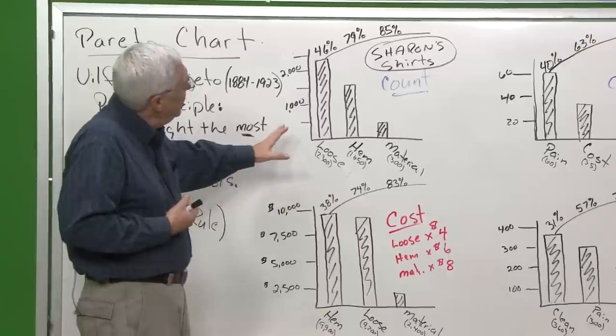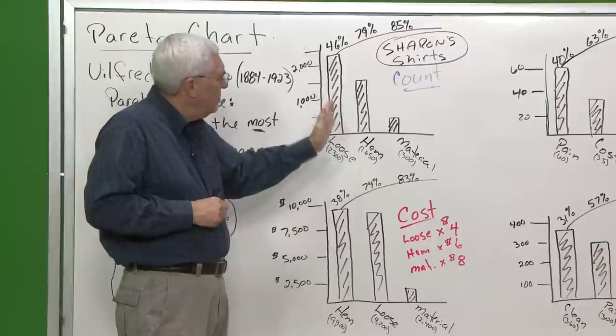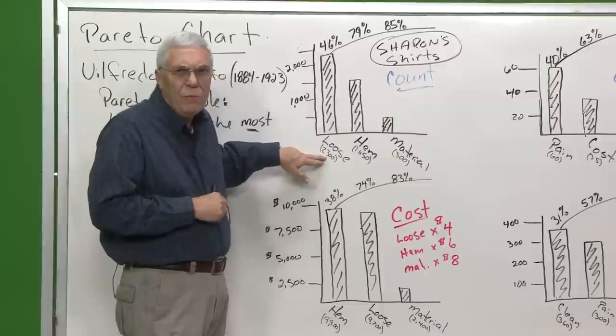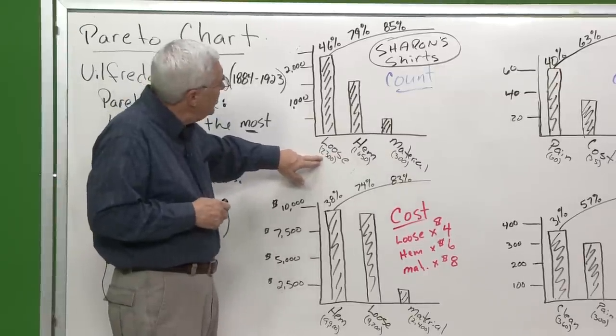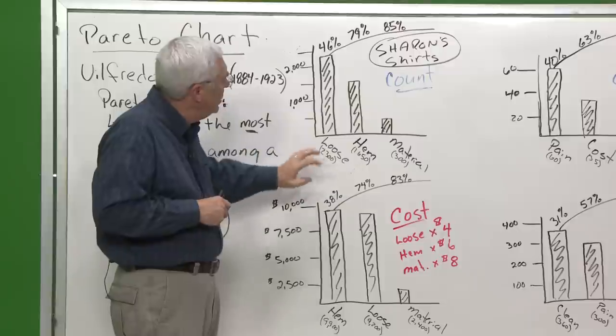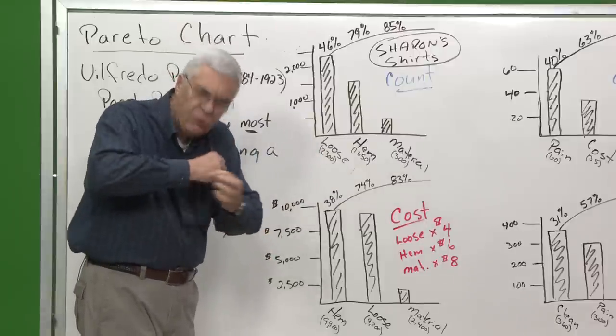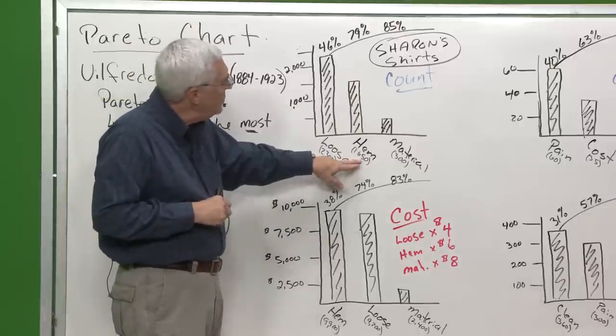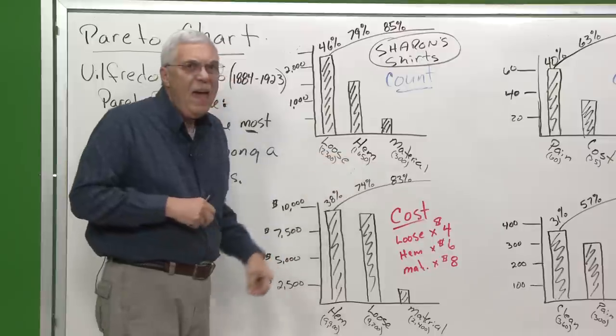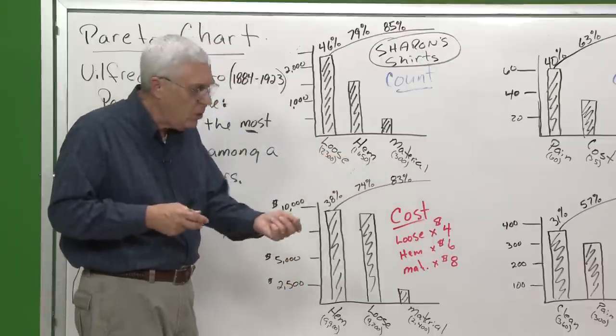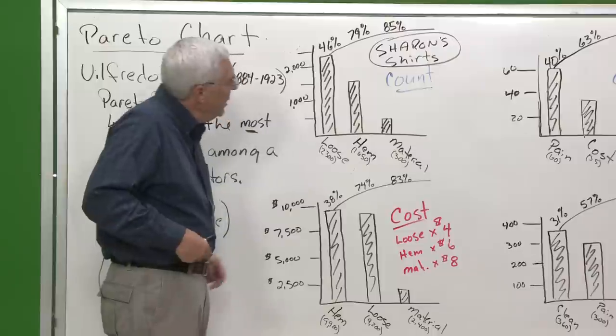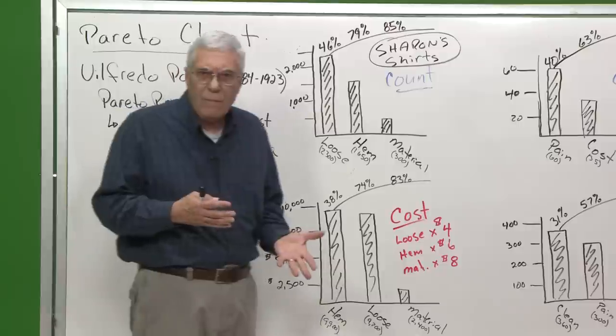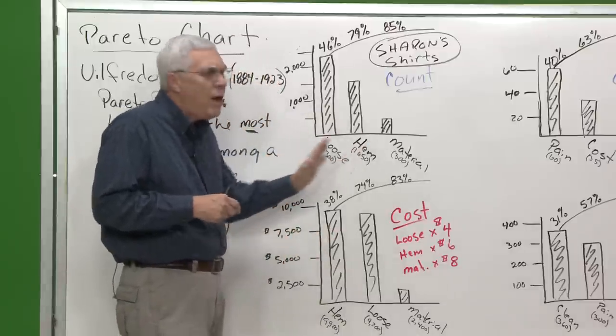So what's happened here is I'm looking at Sharon's shirts, at production defects. I've got loose threads, and actually over this period of time I had 2,300 shirts that had loose threads. You've seen them, it's a shirt and it's got little threads hanging out, they need to be clipped. I had 1,650 shirts where the hem had a problem and had to be corrected. And then I had 300 that had a flaw in the material.